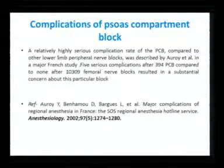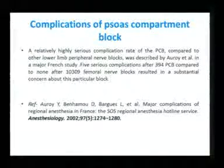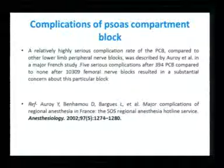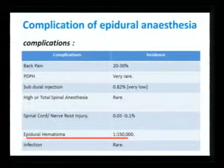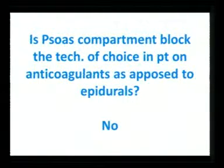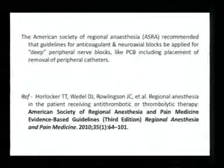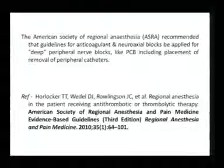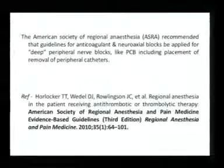Aroy et al. found 5 complications out of 394 psoas compartment blocks, compared to 10,309 femoral blocks where the complication rate was zero. For epidural anaesthesia, the main concern is epidural haematoma, but the incidence is very low — as low as 1 in 150,000. Regarding anticoagulation, the psoas compartment block is not a preferred technique in patients on anticoagulants compared to epidurals — because the American Society of Regional Anaesthesia (ASRA) recommends that anticoagulant guidelines for neuraxial blocks be applied to deep peripheral nerve blocks like the psoas compartment block, including placement and removal of peripheral catheters.